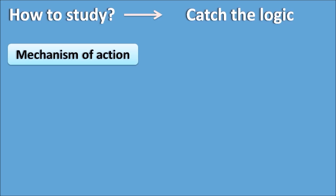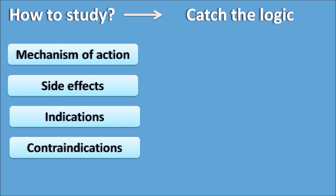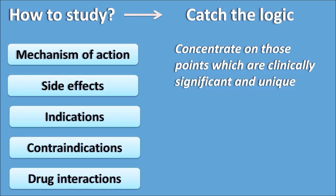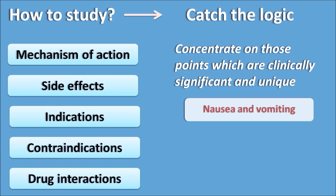In pharmacology you study various concepts like mechanism of action of drugs, side effects, indications, contraindications, and drug interactions. You should concentrate on points that are clinically significant and unique. For example, nausea and vomiting is a side effect of many anti-cancer agents, but cisplatin has a more pronounced effect. Ondansetron, an anti-emetic, is co-administered with cisplatin to prevent nausea and vomiting — this is a clinically very important point.